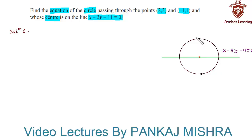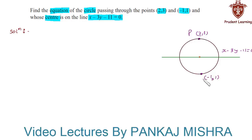Let us assume one point somewhere over here having coordinates (2, 3), let us call it point P, and another point somewhere over here having coordinates (-1, 1), let us call it point Q. Also let us assume that the coordinates of center C are x comma y.